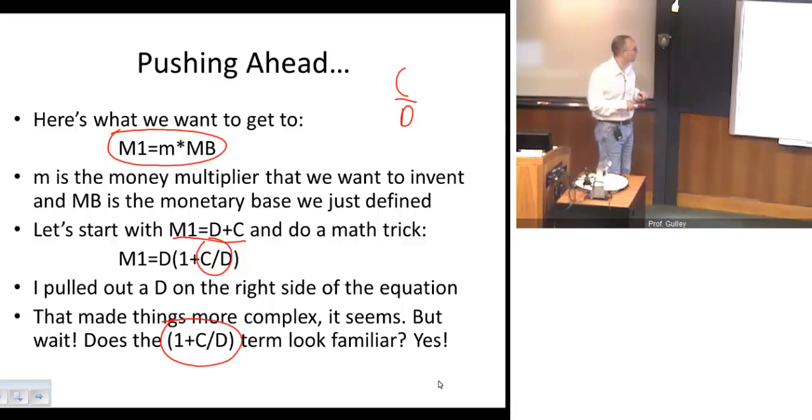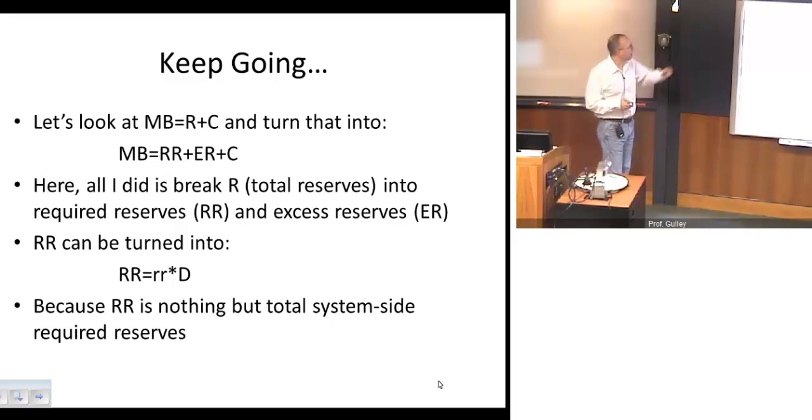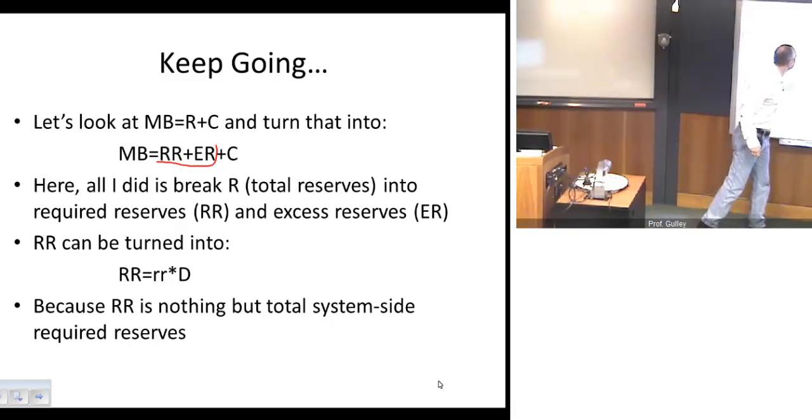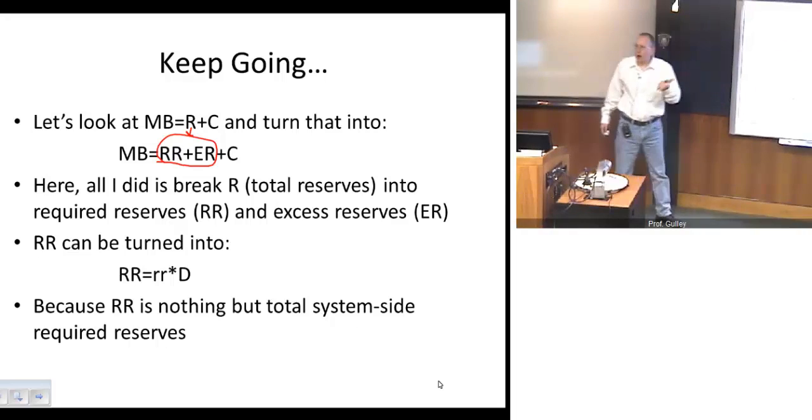So that's our first trick here, and we're going to pull a couple other tricks as well. So now let's take our definition of the monetary base, total reserves plus currency in circulation. What we want to do is break total reserves into reserves that are required, banks have to hold, and excess reserves, again, that banks don't have to hold but decide to. So I've just separated total reserves into its two components.